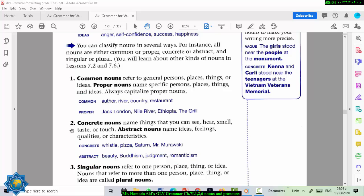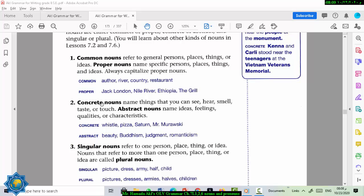Now, let's differentiate between concrete nouns and abstract nouns. Concrete nouns, they name things that you can see, hear, smell, taste, or touch. That means you can feel them with your senses. Abstract nouns, they name ideas in your head, feelings, that nobody can touch. Qualities, or characteristics.